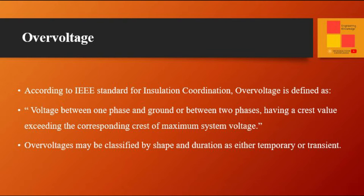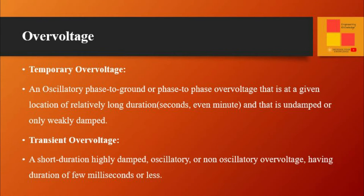Overvoltages may be classified by shape and duration as either temporary or transient. Temporary overvoltage can be defined as an oscillatory phase-to-ground or phase-to-phase overvoltage that is, at a given location, of relatively long duration — in seconds or even in minutes — and that is undamped or only weakly damped.